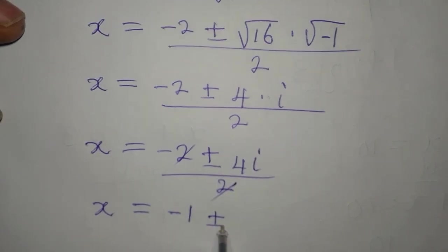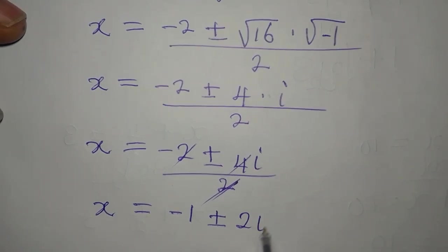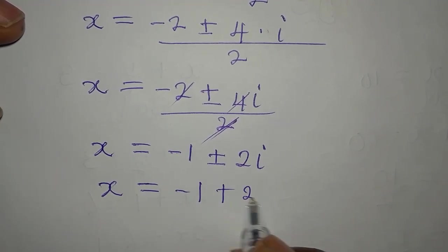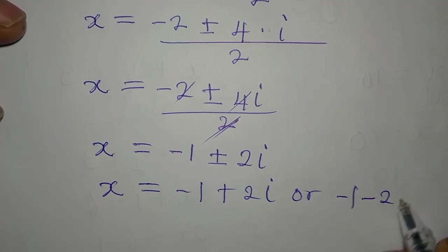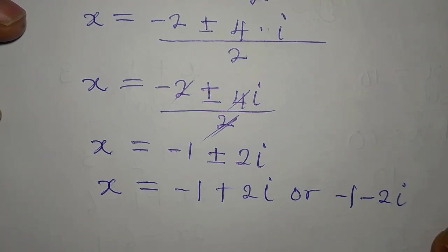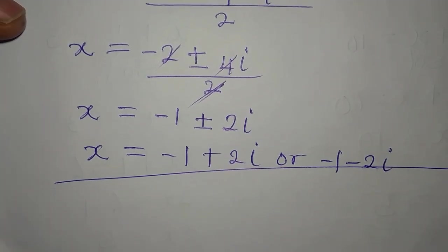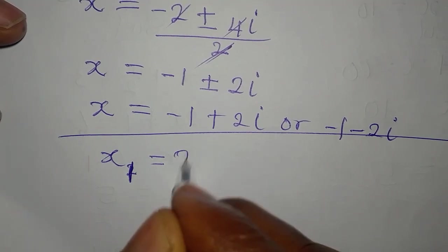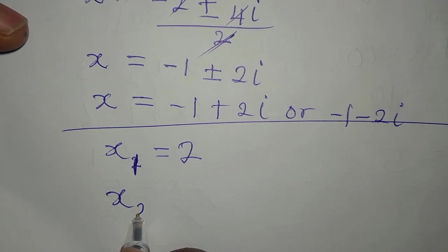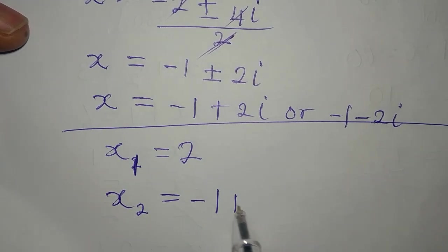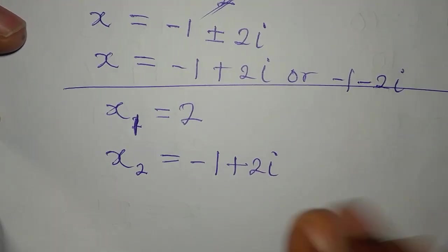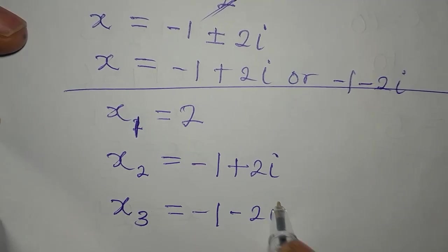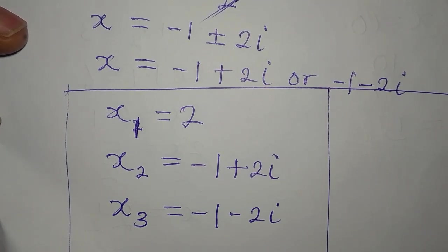Dividing through by 2, we get x equals negative 1 plus or minus 2i. So our three solutions are: x₁ equals 2, x₂ equals negative 1 plus 2i, and x₃ equals negative 1 minus 2i. These are the three solutions to the problem.